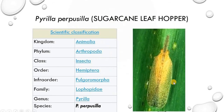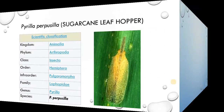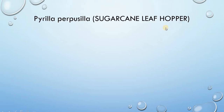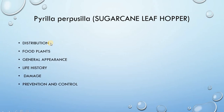This is the picture showing the sugarcane leafhopper. We will discuss the sugarcane leafhopper under the following categories: first is the distribution, food plants, general appearance, life history, damage, and its prevention and control.